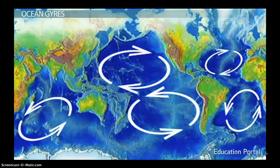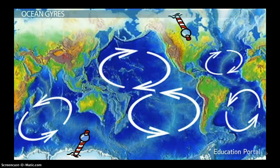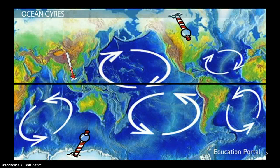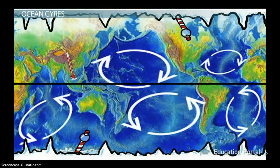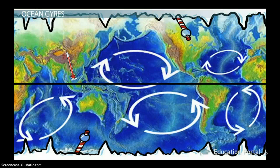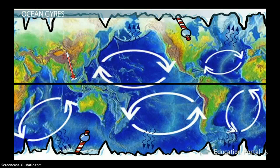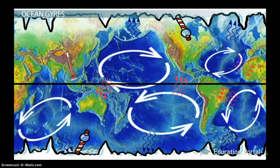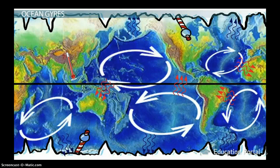Ocean gyres are present in every ocean and move water from the poles to the equator and back again. The water warms at the equator and cools at the poles. Because ocean water temperatures can transfer to the air, the cold and warm waters circulated by the gyres influence the climate of nearby land masses.